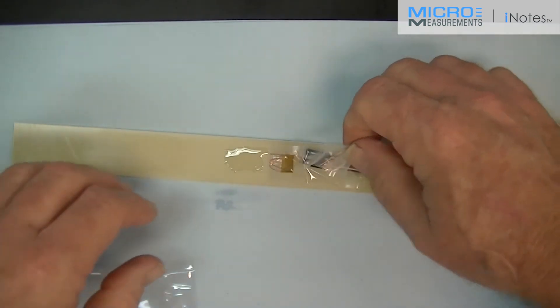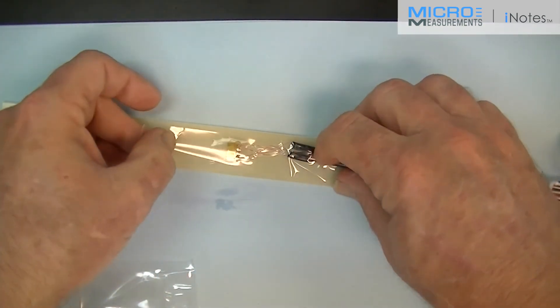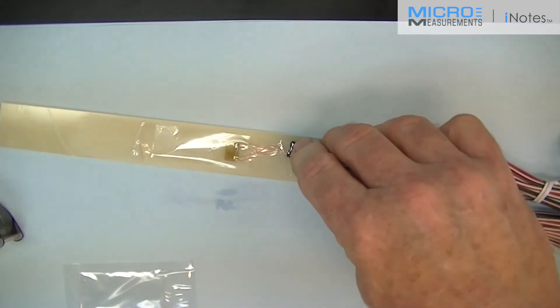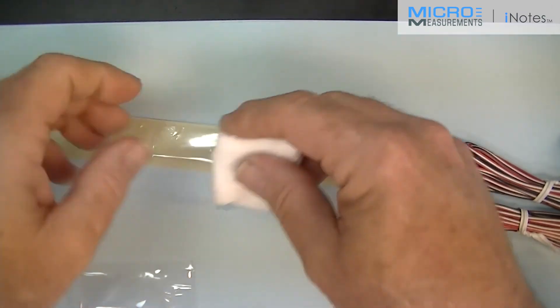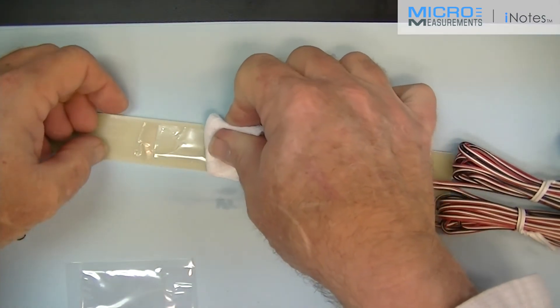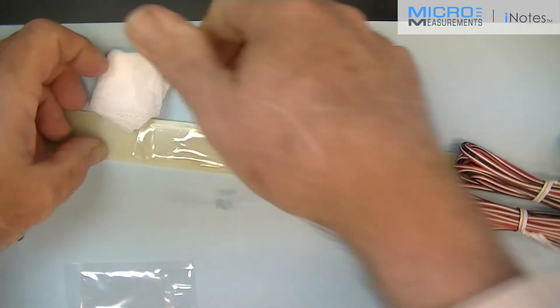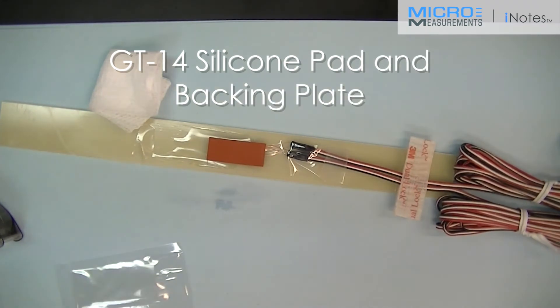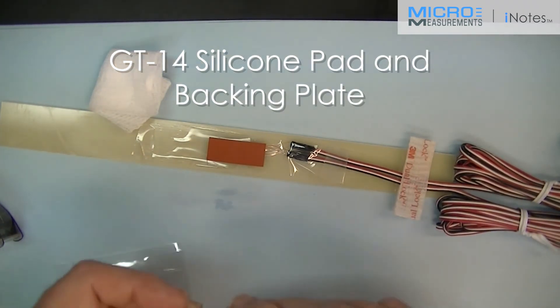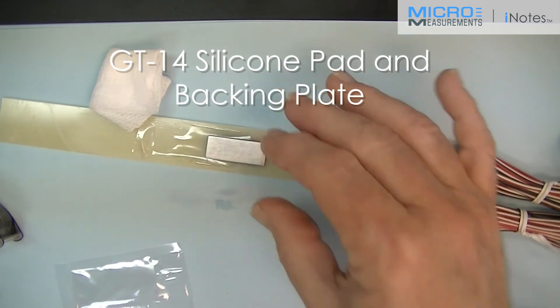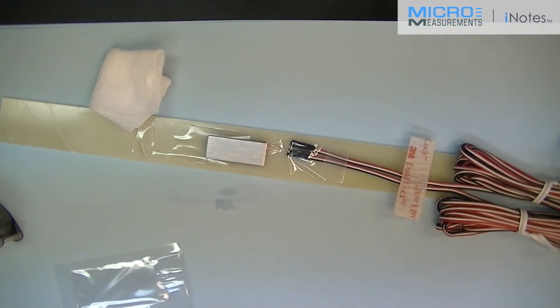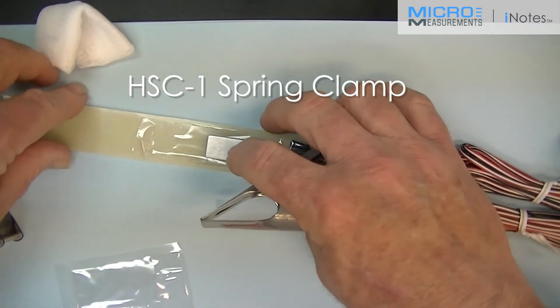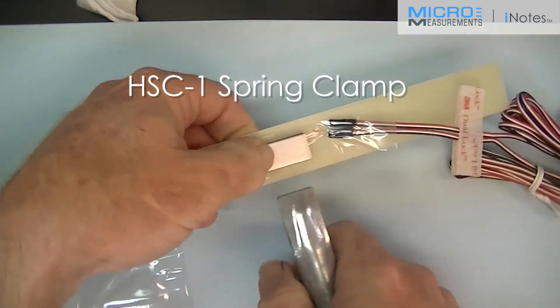I'm then going to reposition the gauge. Using a gauze sponge folded into quarters to squeegee out the excess adhesive. Locating a silicon gum pad, I'm going to place that directly over the gauge. An aluminum backing plate. And finally, a Hargrave clamp for applying the clamping pressure to our adhesive system.